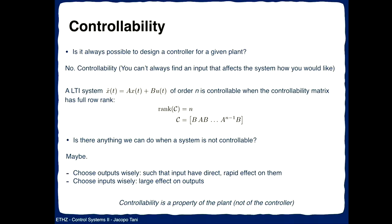If the system is not controllable, there is typically nothing we can do. The only thing a control engineer can do is decide where to place the actuators and sensors. Sensors play no role in the controllability problem. The choice of actuators — the inputs to the system — should be wise, meaning it's best to have the biggest possible influence of inputs on the outputs. Controllability is always the first check one has to do when designing a controller.